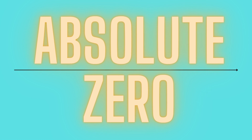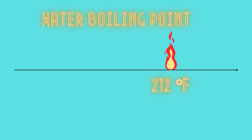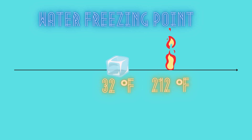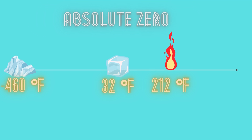And if you don't know, absolute zero is — well, that's pretty cold. If you were to plot out the boiling point of water at 212 degrees Fahrenheit, this is where that would appear. At 32 degrees Fahrenheit, the freezing point of water would appear right there. But when it comes to absolute zero, at negative 460 degrees Fahrenheit, that's where things get blown out of proportion.